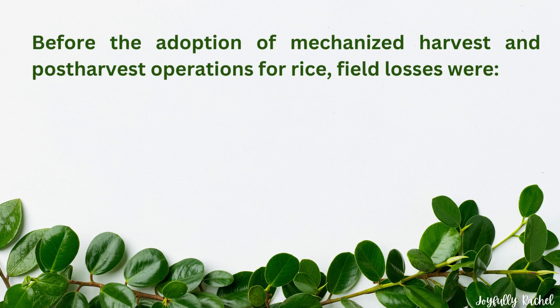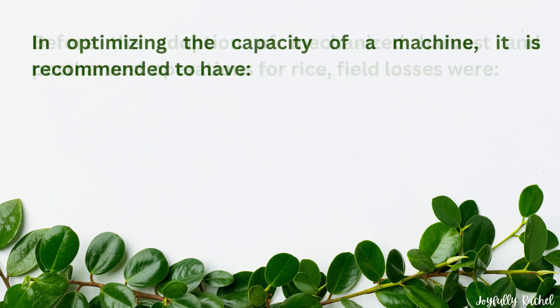Before the adoption of mechanized harvest and post-harvest operations for rice, field losses were 10 to 37 percent.